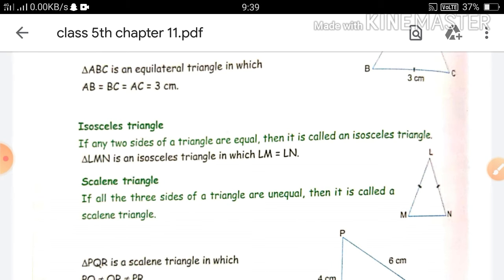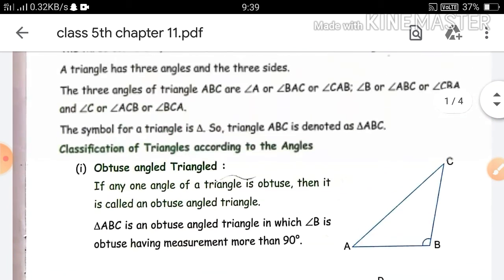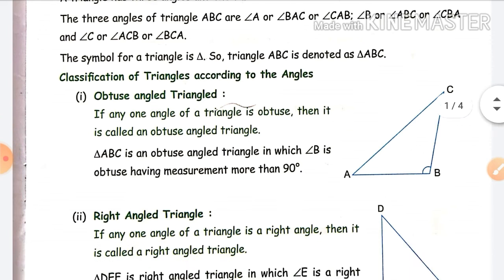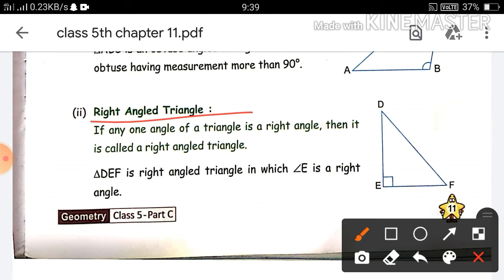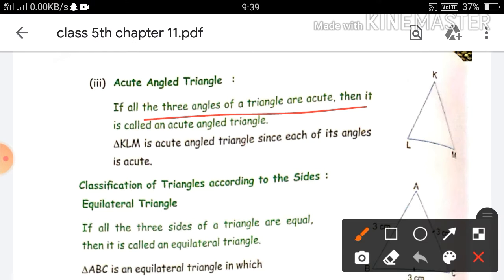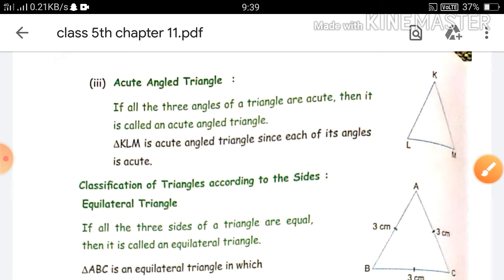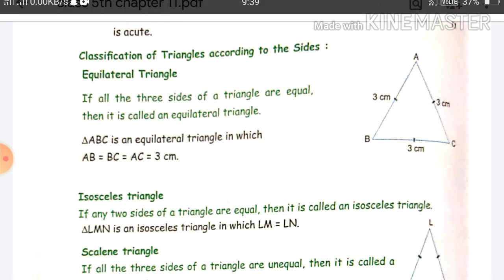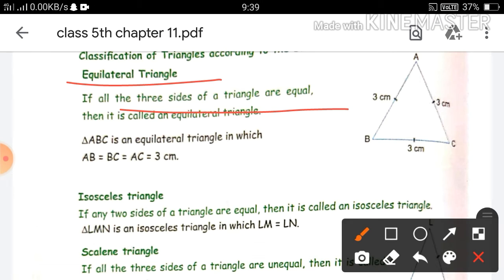Let's rewind and go over the classification again. According to angle: first is obtuse angle triangle, in which any one angle is more than 90 degrees. Next is right angle triangle, in which any one angle is 90 degrees. Next is acute angle triangle, in which all three angles are less than 90 degrees. Classification of triangle according to sides has three types: equilateral triangle — three sides are equal; isosceles triangle — two sides are equal; scalene triangle — all three sides are unequal.